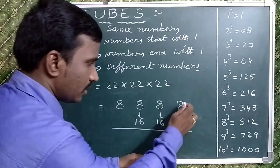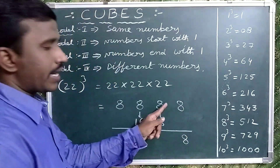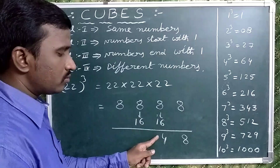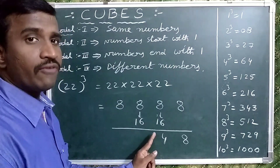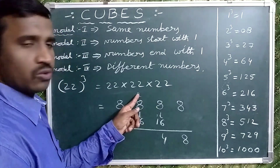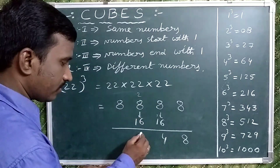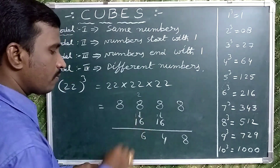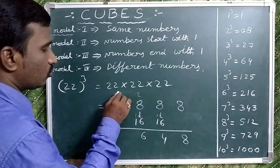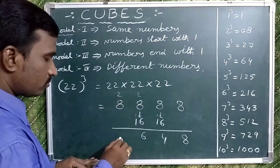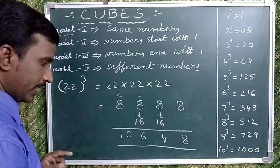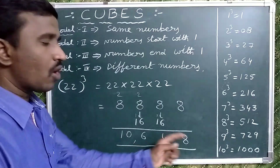Now add: 8 plus 6 is 14. Write 4, carry 1. 1 plus 1 is 2; carry that 2 forward to the next digit. Write 2. 8 plus 2 is 10. 10 plus 6 is 16. Write 6, carry 1. 1 plus 1 is 2; carry 2 forward. 8 plus 2 is 10. So 22 cube is 10648.